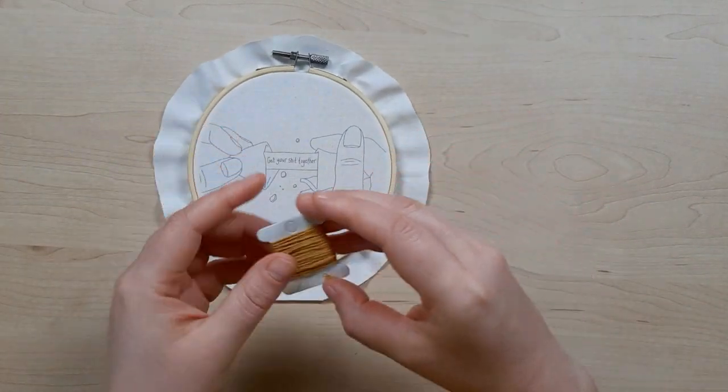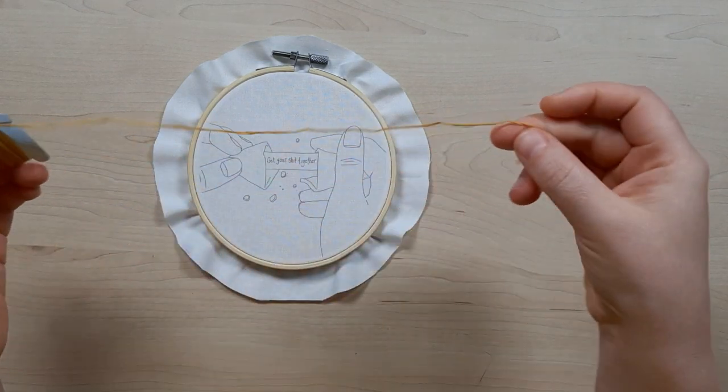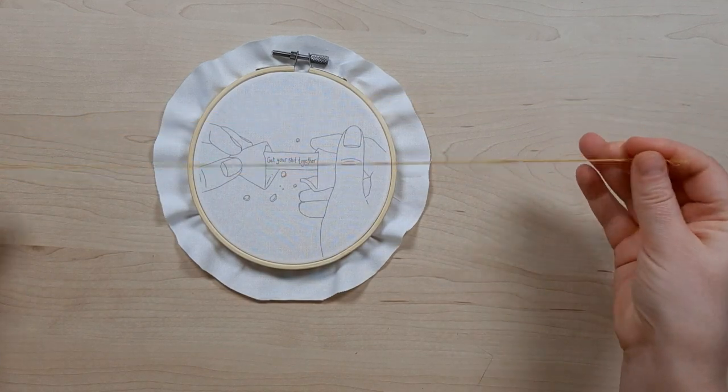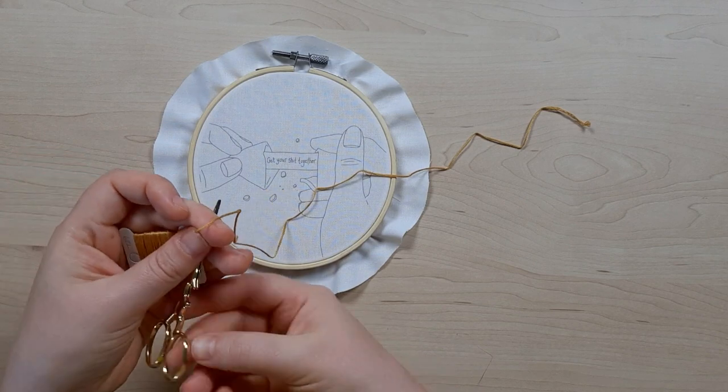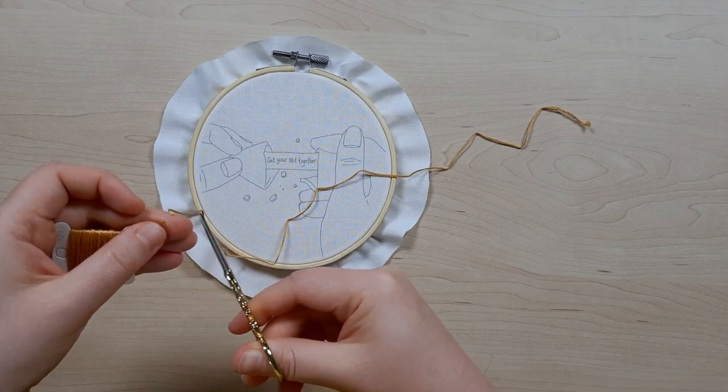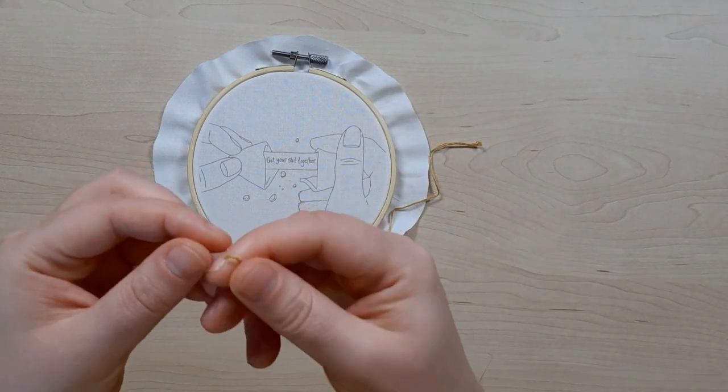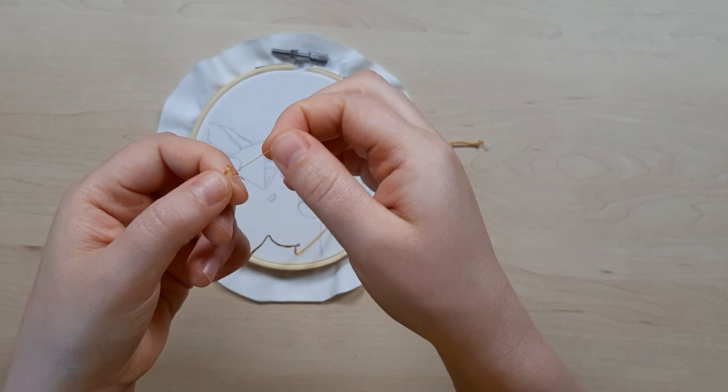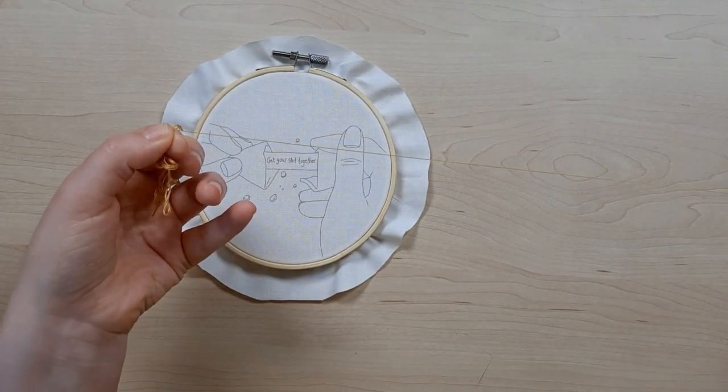To begin, we're going to cut off about 10 to 12 inches of floss. I don't use lengths much longer than that because you run the risk of tangling your thread as you work. We're going to separate one strand - we're only going to use one strand. Pinch off one of the threads out of the six and gently pull up and away, and that is going to separate our working thread.